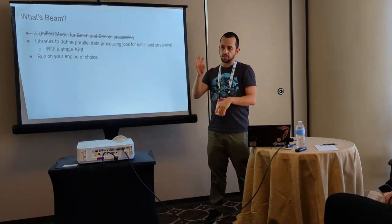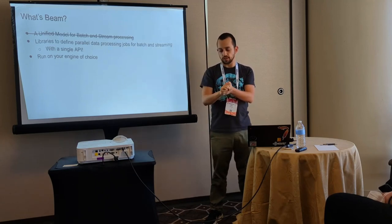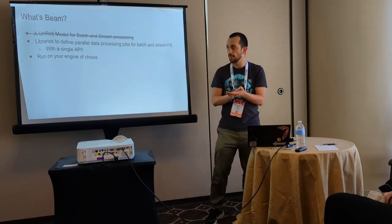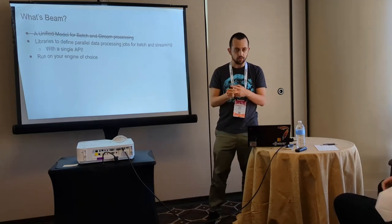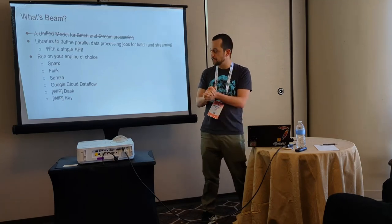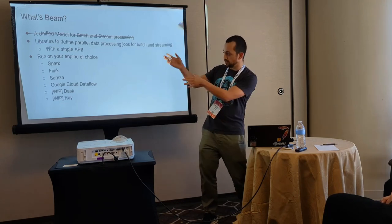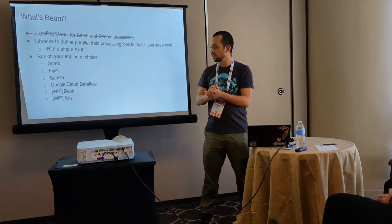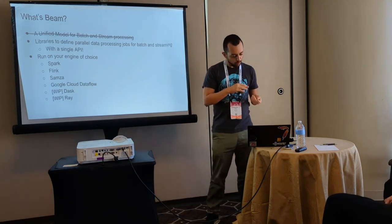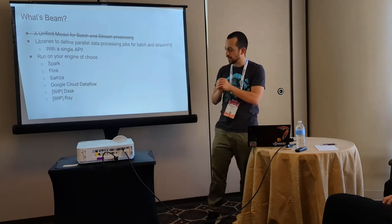These libraries define APIs that you can use to define data processing flows, and you can use them for both batch and streaming real-time processing. What we say is that you can run on your engine of choice. Some examples of engines you can run on are Spark, Flink, and Apache Samza — these three are Apache projects. Then there's Google Cloud Dataflow, which is a product we have on Google Cloud.